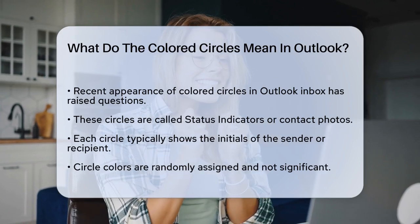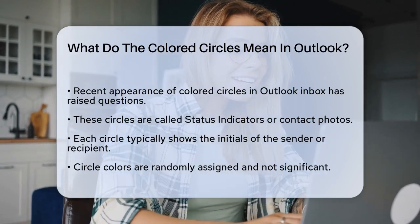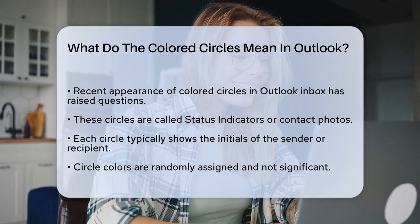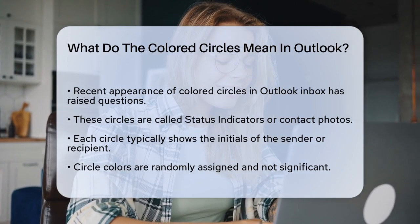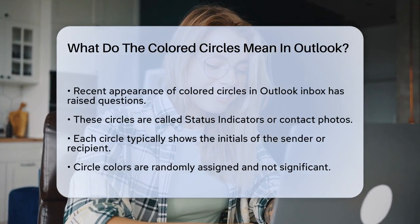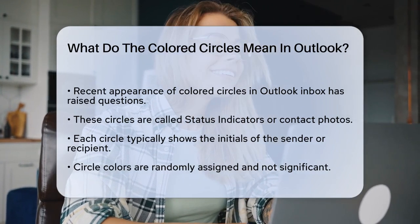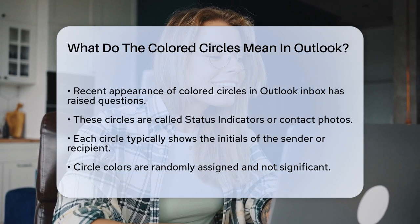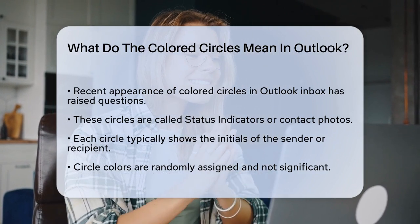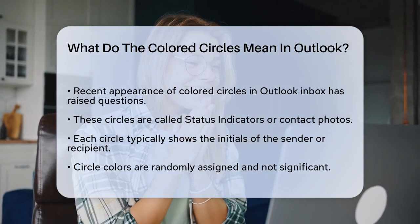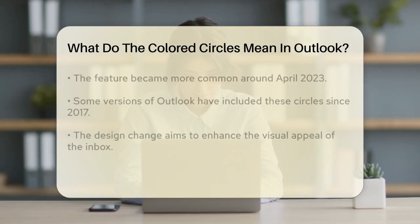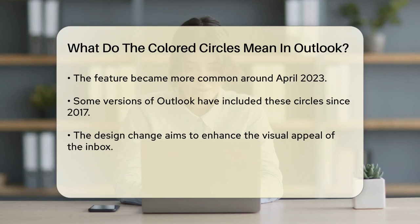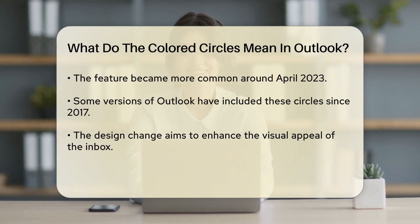These colored circles are known as status indicators, or contact photos, and they represent the sender or recipient of an email. Each circle typically contains the initials of the person's name. The colors of these circles are not categorically significant, but rather seem to be randomly assigned.